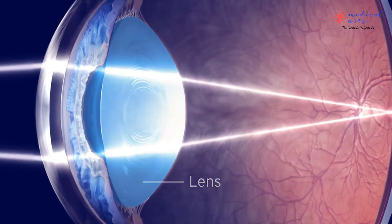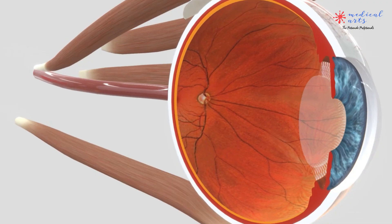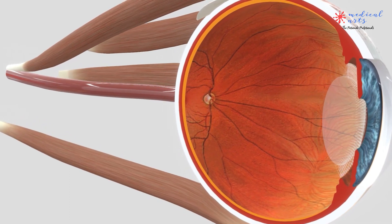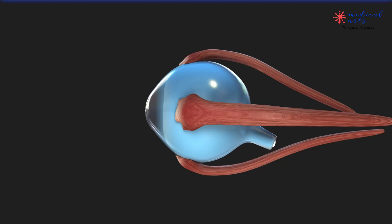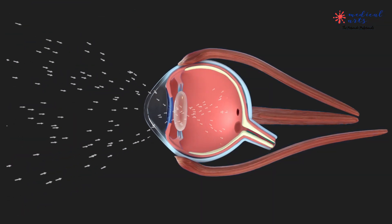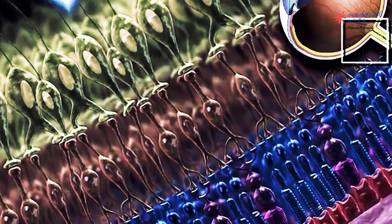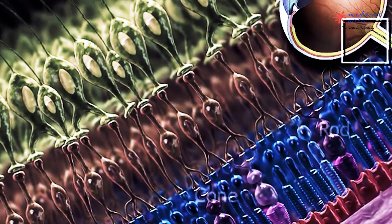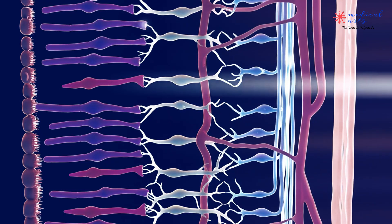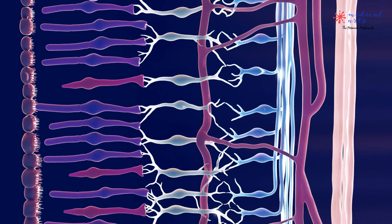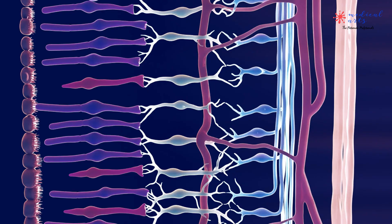The innermost layer of the eyeball is the retina. The retina can be imagined as the wall on which images are projected. The light passing through the cornea, pupil, and lens gets focused on the retinal membrane. The retina is made up of two types of cells — rod cells and cone cells — also called photoreceptors. These cells are responsible for converting the light that enters your eye into electrical signals, which are then transferred to the brain through the optic nerve for visualization.